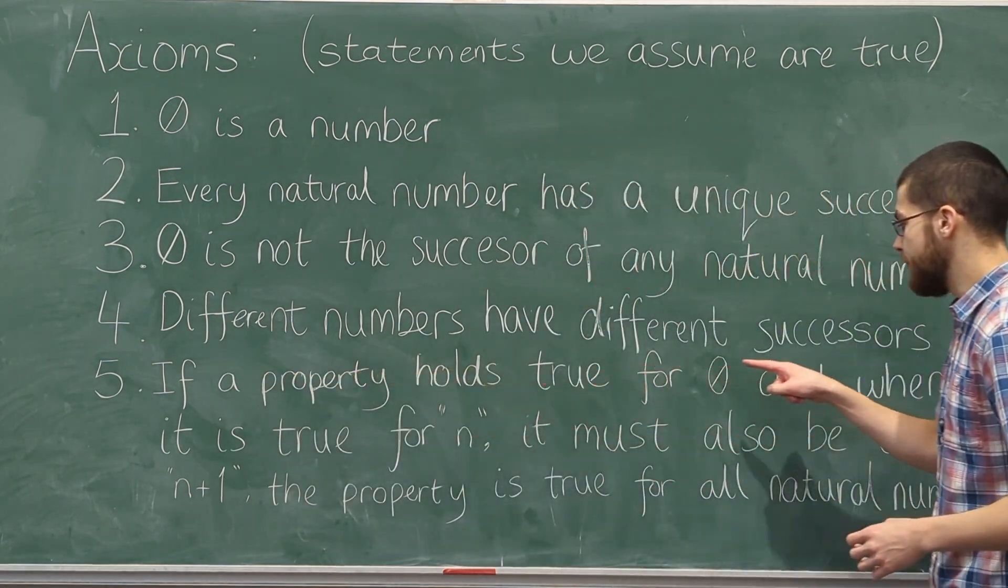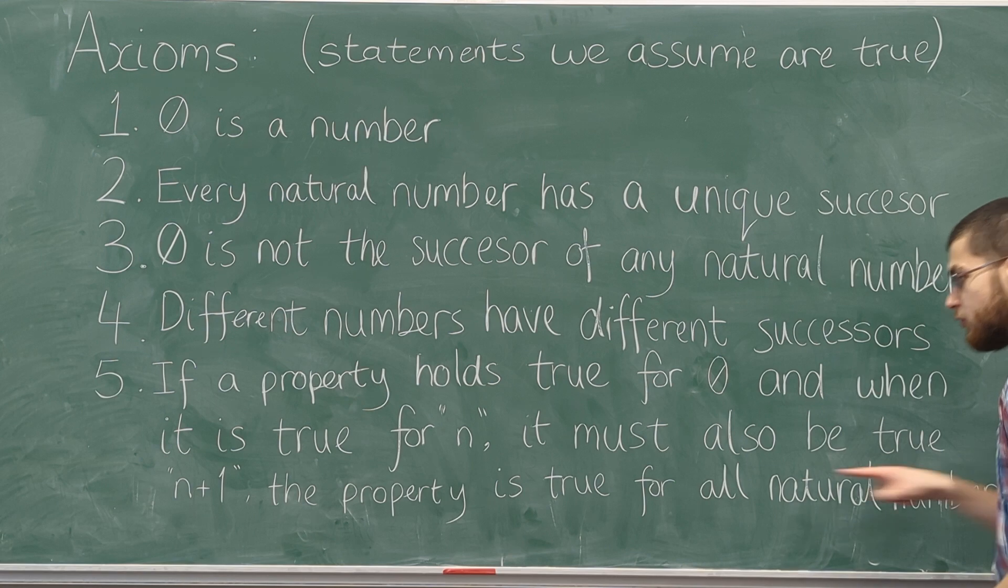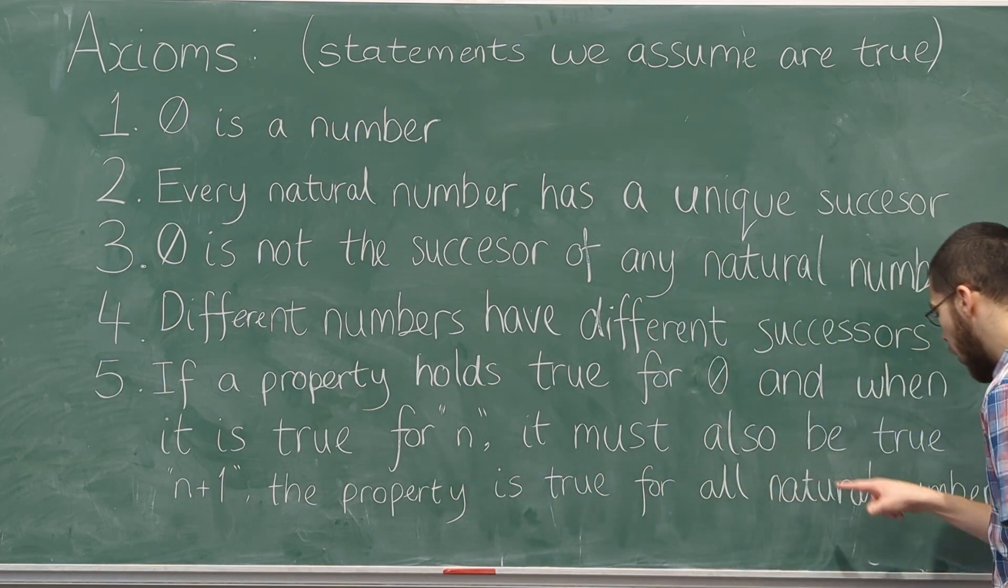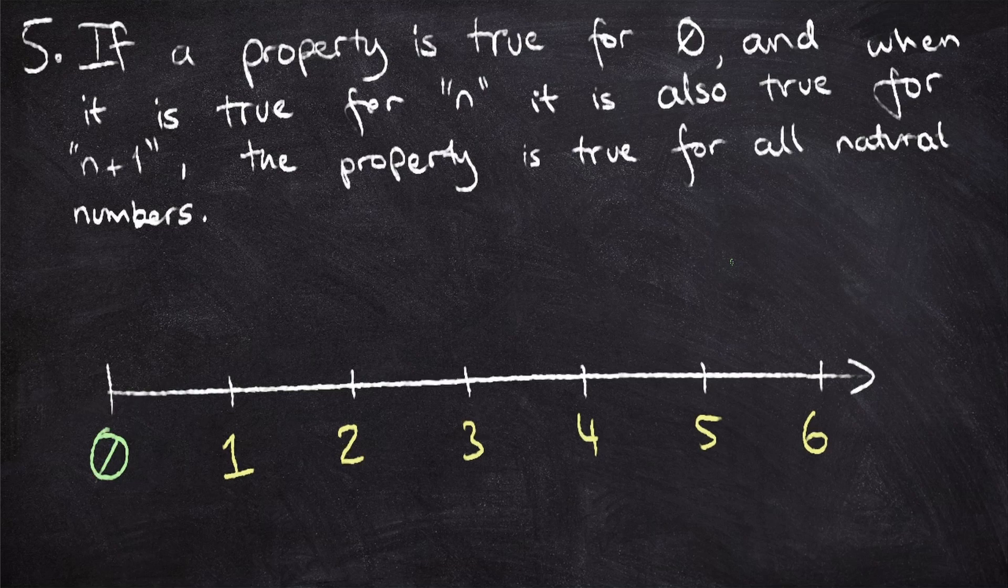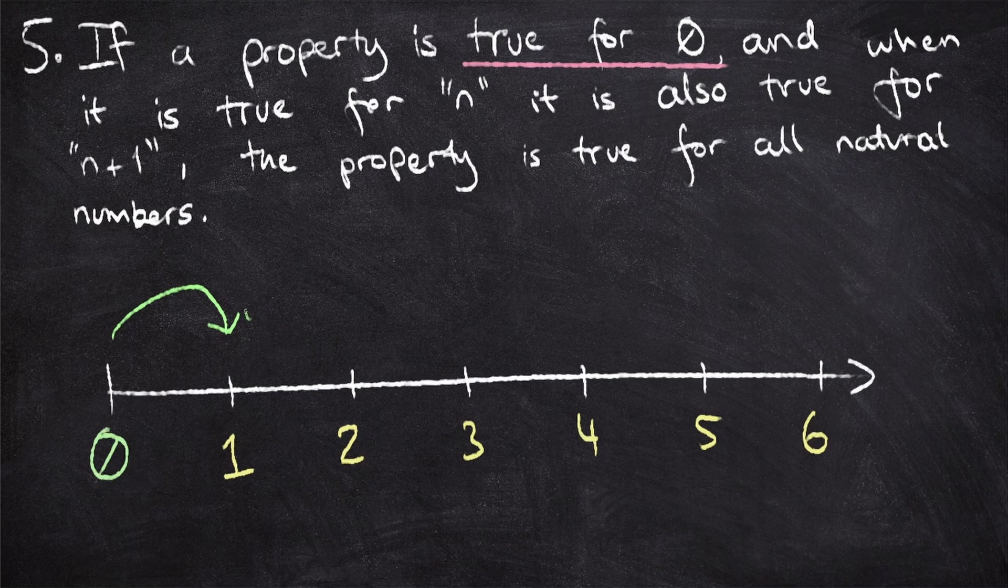And fifth, if a property holds true for the number zero, and when it is true for n, it must also be true for n plus one, the property is true for all natural numbers. This one often causes the most confusion, but it's just saying that when something is true about zero, and when a statement is true about one number means that it's true for the next number, then it must be true for one, and also two, and also three, and so on.